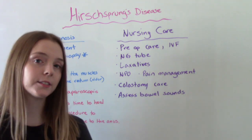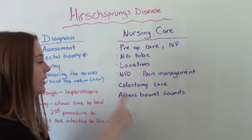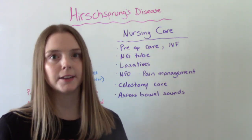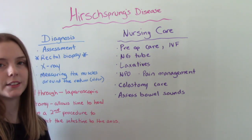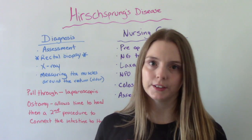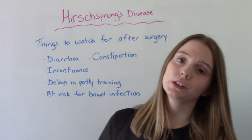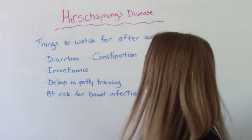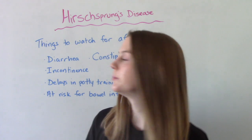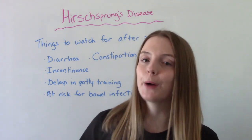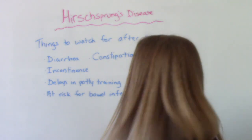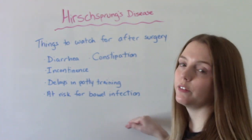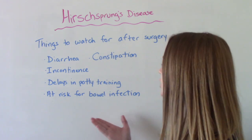After surgery, we're going to manage pain. If they have the ostomy surgery, we need to teach them — or mom and dad — about colostomy care. And of course, the big ones: assessing bowel sounds after surgery and assessing bowel movements. After successful surgery, they should be able to have a bowel movement. A few things to watch for post-op: children may experience both diarrhea and constipation, and they may have bowel incontinence — leaking of stool. If they're at potty training age, there may be delays. They are also at risk for a bowel infection, especially within the first year after surgery, so watch for signs of infection.